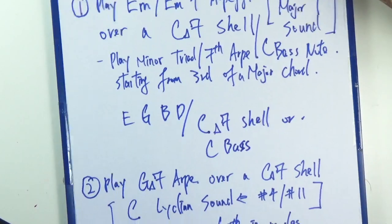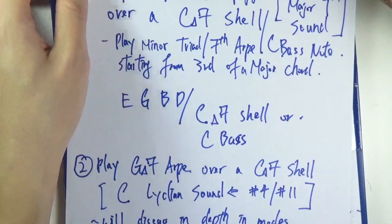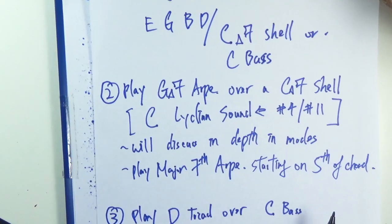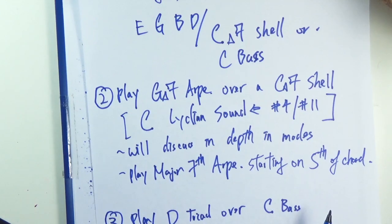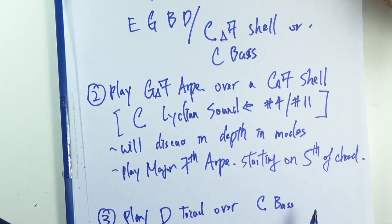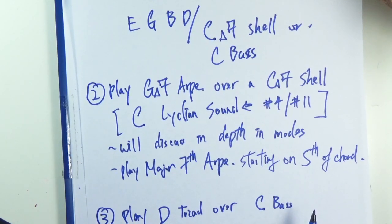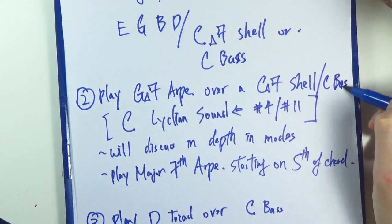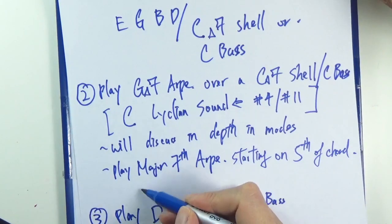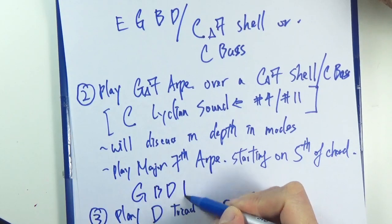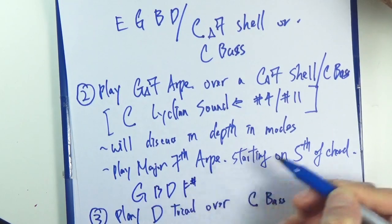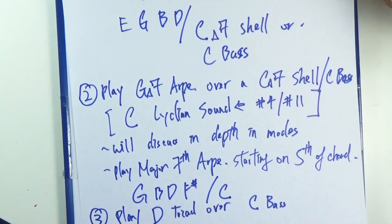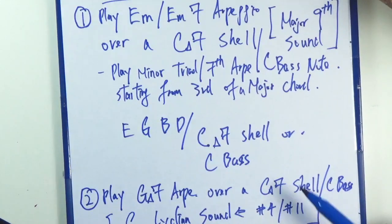The second one gives us a Lydian sound. It's a G major seven arpeggio or chord over a C major seven shell, or just a C bass note. That's G, B, D, F-sharp over C.